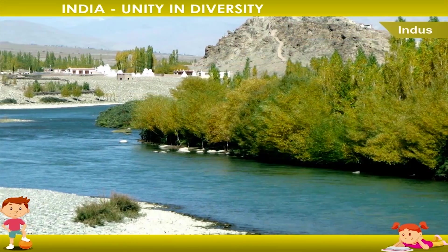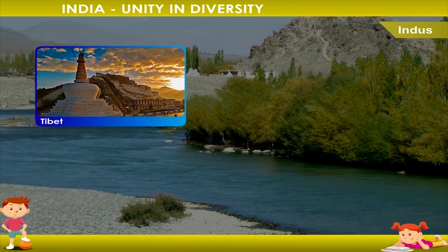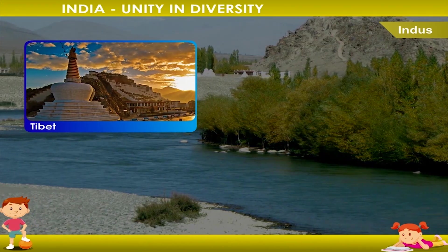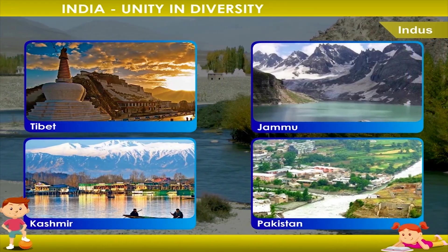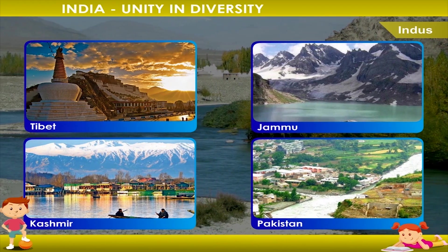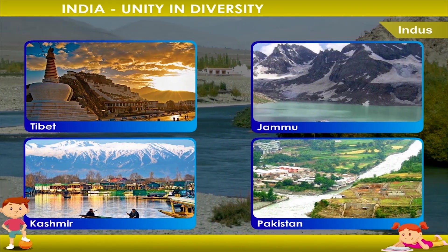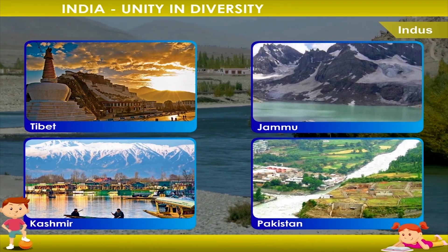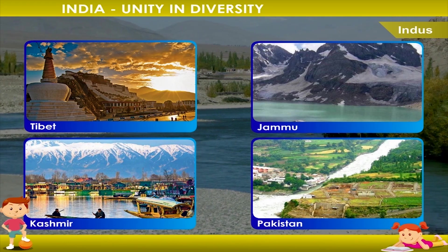The Indus river flows from Tibet into Jammu and Kashmir and then into Pakistan. This is the greatest river on the western side of the subcontinent.